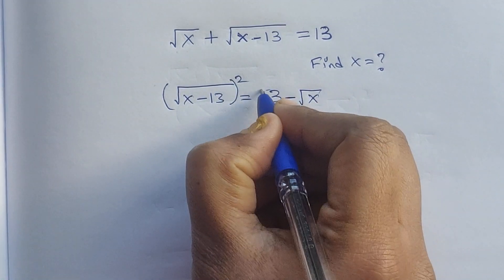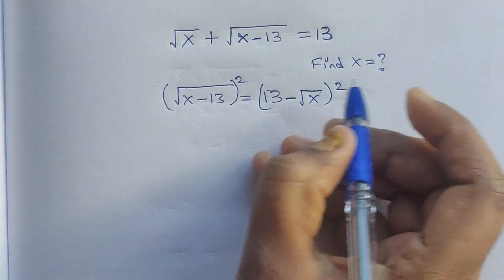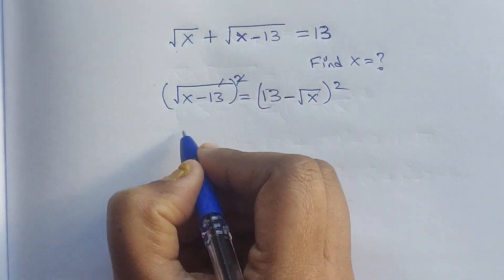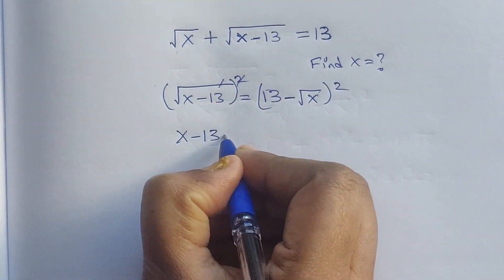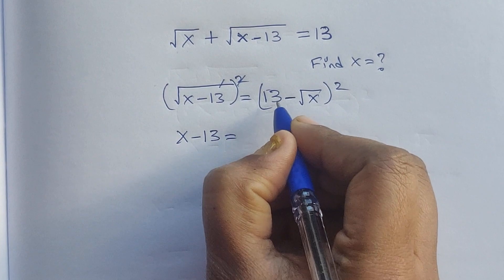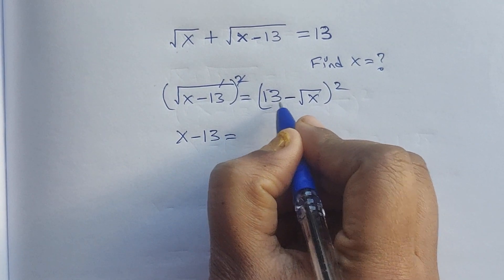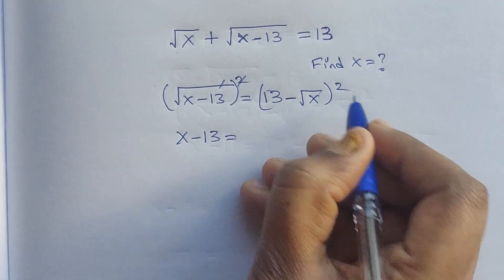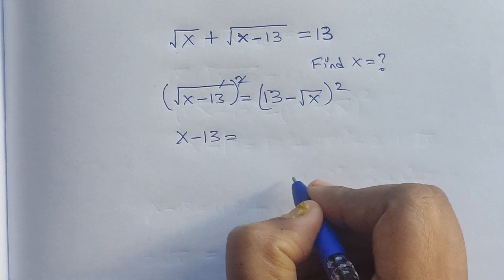Squaring both sides: the square on the left cancels, giving x - 13 equal to (13 - √x)².